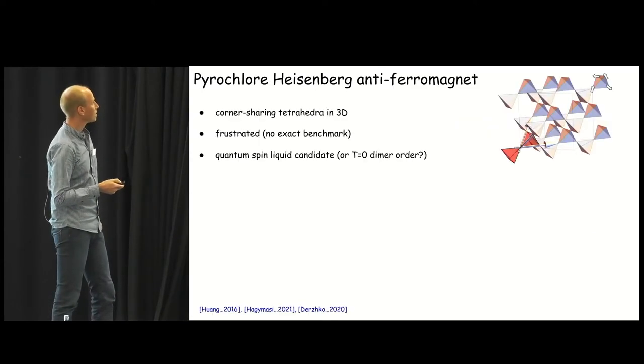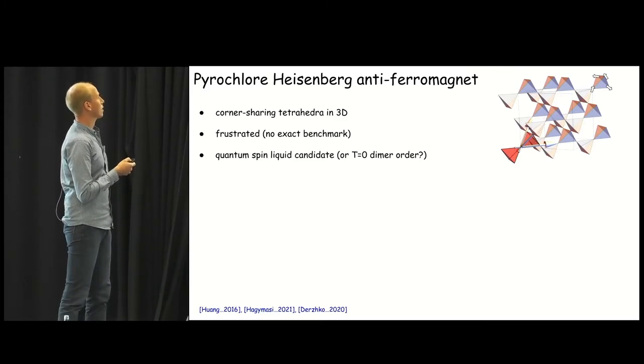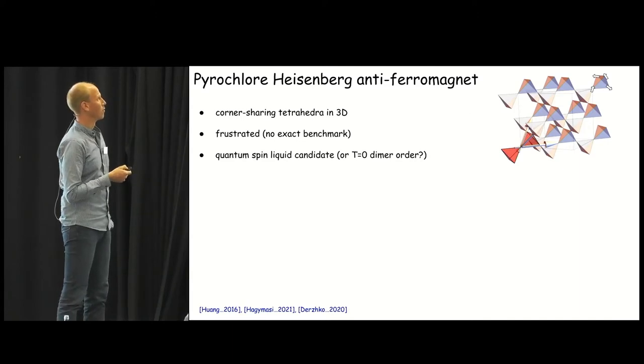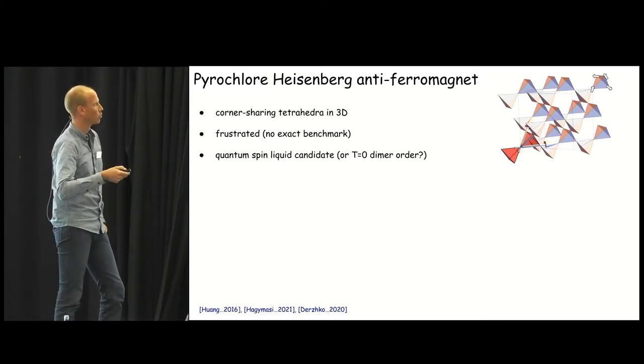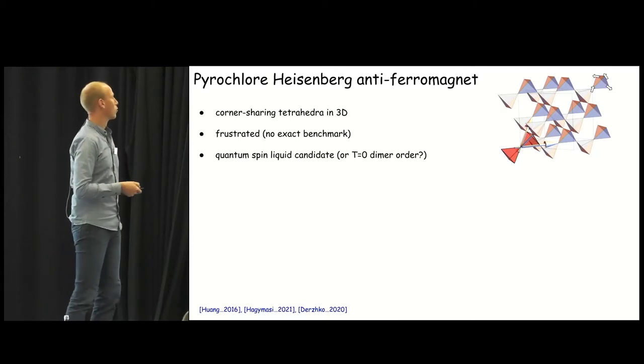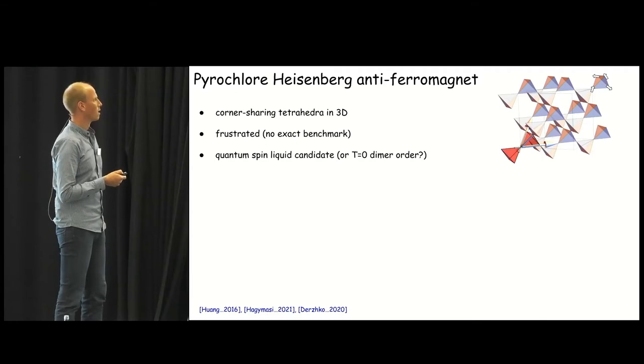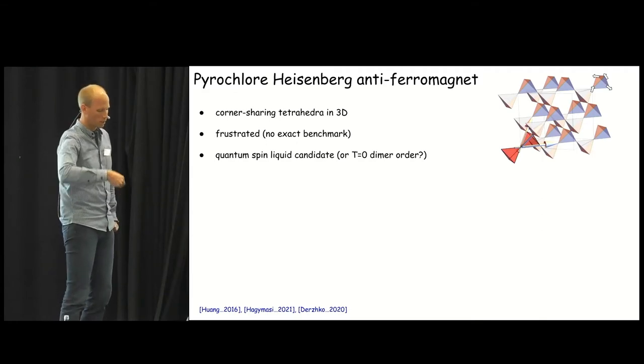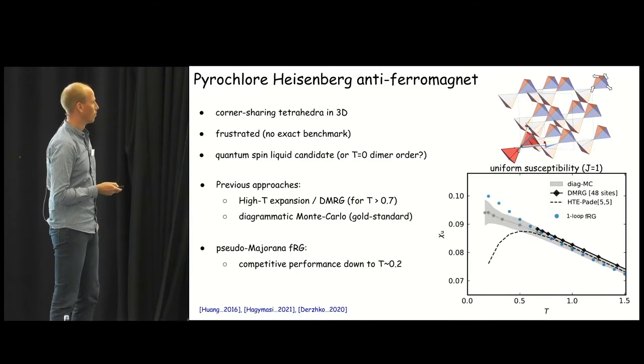This is the Heisenberg dimer. Now, let's go to some more serious system. The pyrochlor lattice with the Heisenberg antiferromagnetic put on it. So, pyrochlor lattice is a lattice of corner sharing tetrahedra in 3D. The spins sit on the corner of the tetrahedra, and this is highly frustrated. So, there is no exact benchmark like in the dimer case. And it's also a quantum spin liquid candidate, until recently at least, because then it was found that at zero temperature there might be spatial symmetry breaking in dimer order.